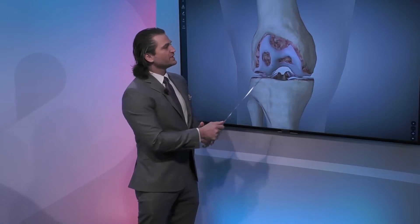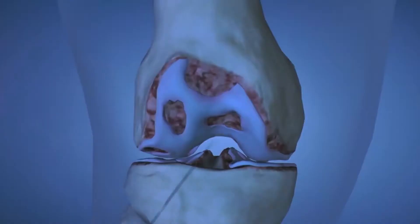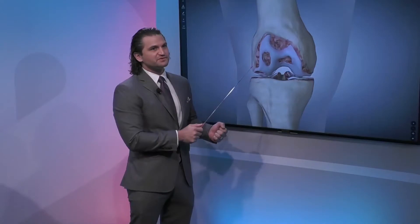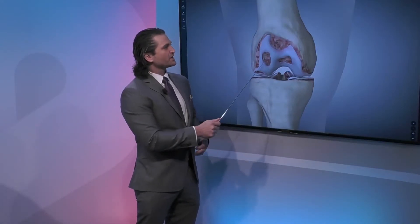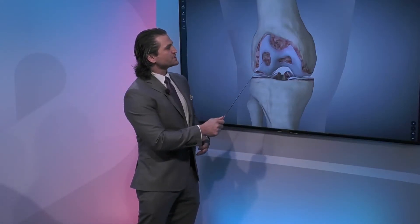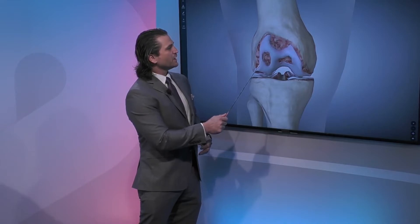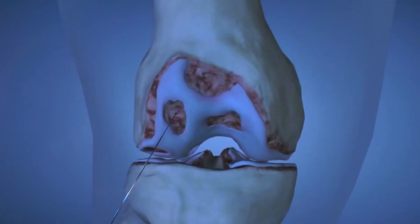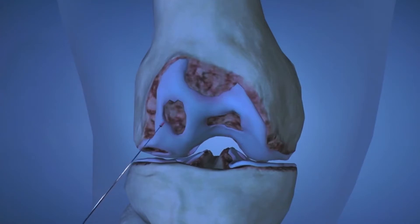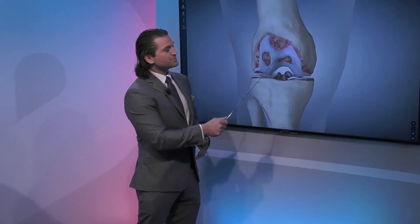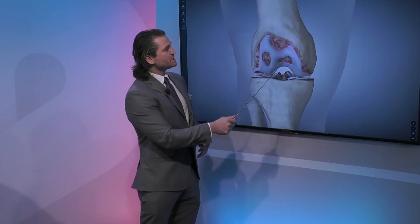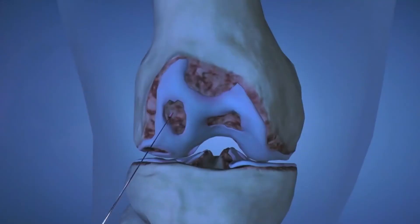Arthritis is the wearing down of this surface — the cartilage surface, which is a smooth, very tough surface. As that surface starts to wear down, you will get some areas of degeneration, or actually holes. In real life, when I look at the inside of a knee, I will see areas where the cartilage is completely worn away and what's exposed is the bone underneath it.